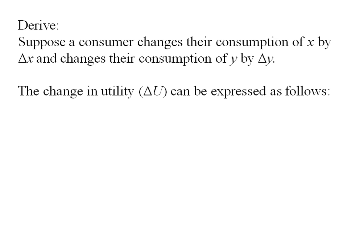Well, the resulting change in utility, delta U, we can express as follows. Delta U, the change in utility, is going to be the marginal utility of x times the change in consumption of x plus the marginal utility of y times the change in the consumption of y.